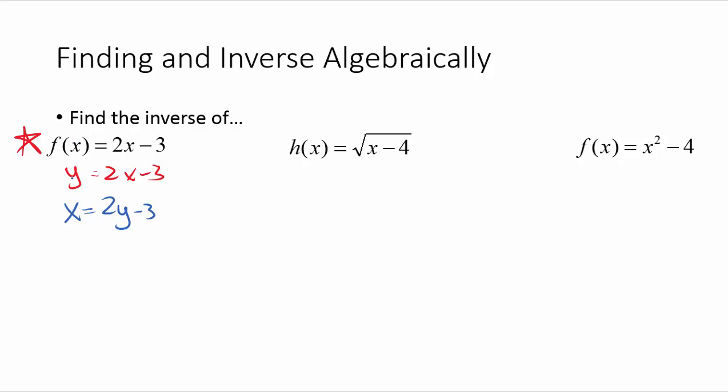So step one, write it with a y; step two, switch the x and the y; and then the last step here will be to solve for y. So let's get the y by itself. I'm going to add three on both sides, we'll get x plus three equals two y, and then if I divide by two on both sides, I could write it as one half x plus three over two, that's the same thing.